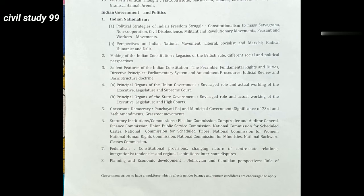6. Grassroots Democracy: Panchayati Raj and Municipal Government, Significance of 73rd and 74th Amendments, Grassroots Movements. 7. Statutory Institutions and Commissions: Election Commission, Comptroller and Auditor General, Finance Commission, Union Public Service Commission, National Commission for Scheduled Castes, National Commission for Scheduled Tribes, National Human Rights Commission, National Commission for Minorities, and National Backward Classes Commission.